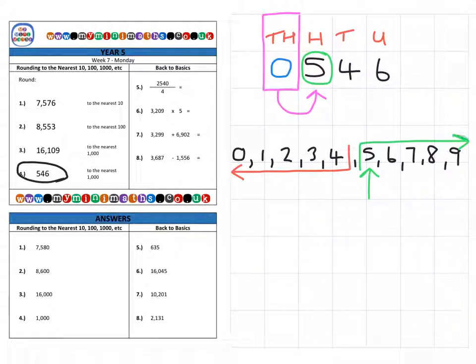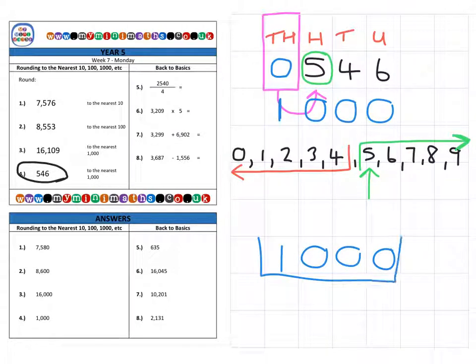So, it rounds the number up. So, the 0 becomes a 1. And then we place our 0s to give it the full, whole 1,000, which is what the question asked for.